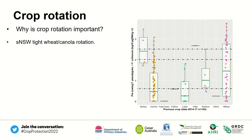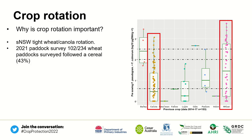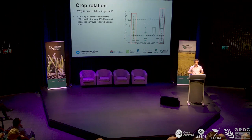Crop rotation — why is this important? In southern New South Wales we have very tight wheat or cereal-canola rotations. A graph of southern NSW data from 2014 to 2017 shows that probably 90% of data points sit in either wheat or canola as the previous crop before a cereal goes in. Our 2021 paddock survey found 102 of 234 paddocks surveyed had a cereal prior to a wheat going in — so we are putting a susceptible host into an environment conducive for disease.